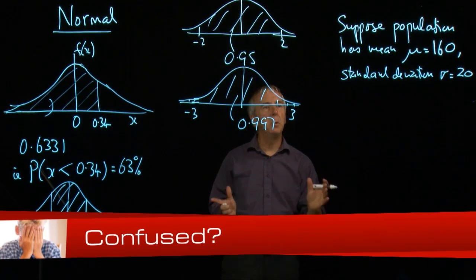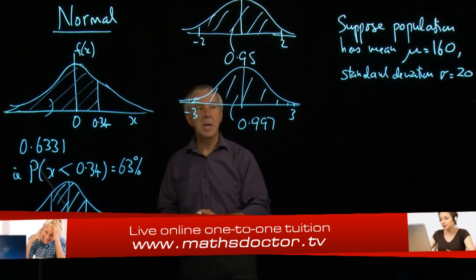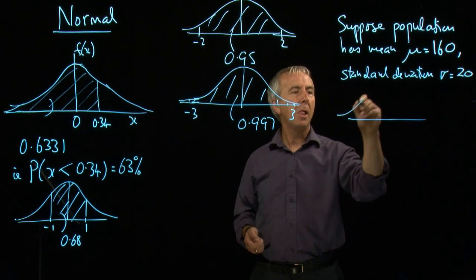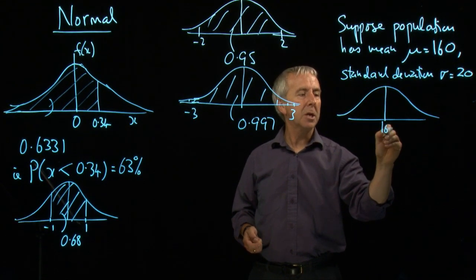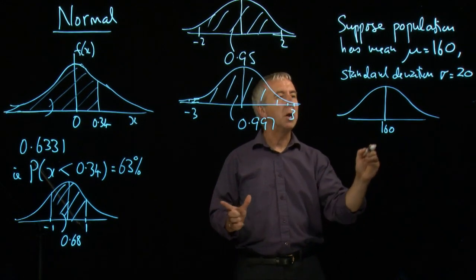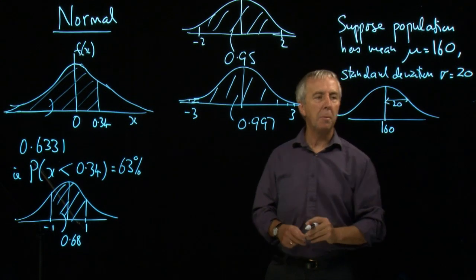What's the probability that within that population the value is less than 190? So what we have here is this scenario now. The mean is 160. And sigma, which is the measure of spread, the standard deviation, is 20. So it's going to look something like that.